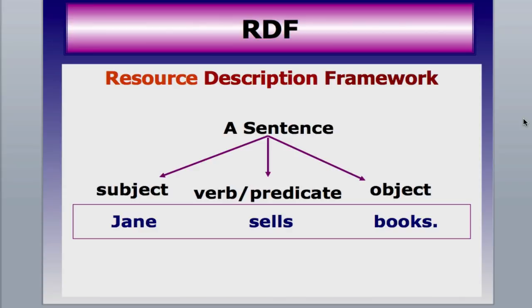What we're going to use is an RDF — a Resource Description Framework. This is basically a triplet, a very simple sentence: 'Jane sells books.' Jane is the subject, sells is the verb or predicate, and books is the object. Using the RDF, we can take any object, such as a person named Jane, and connect it to another object, say books, through an action — in this case, selling. The RDF triplet connects Jane and books in a specific relationship that a computer can remember and work with as data.